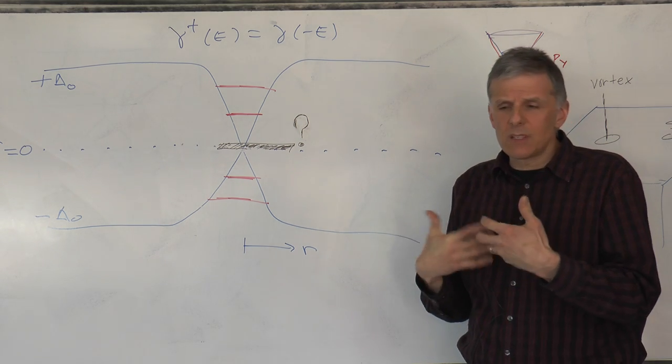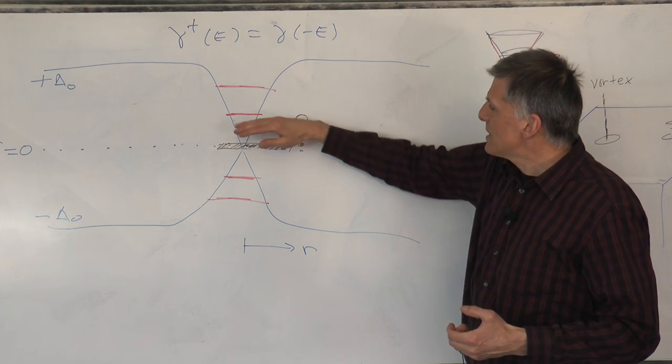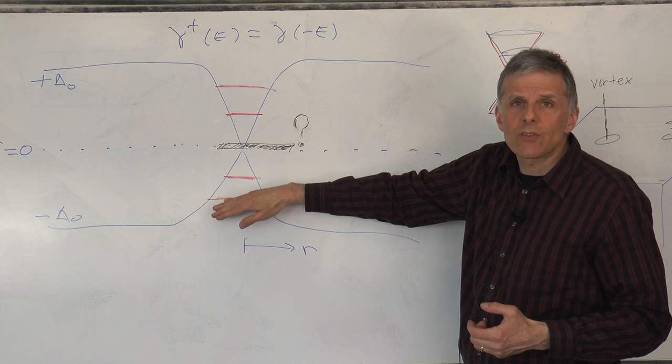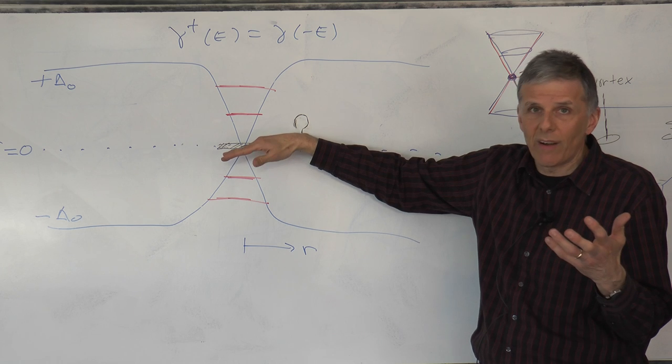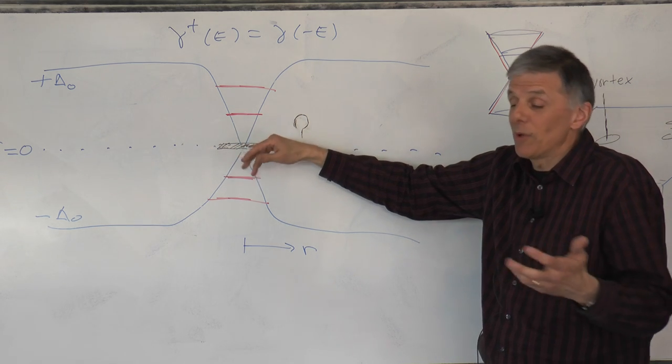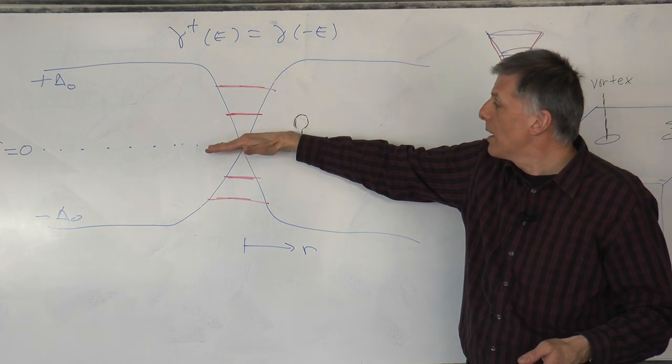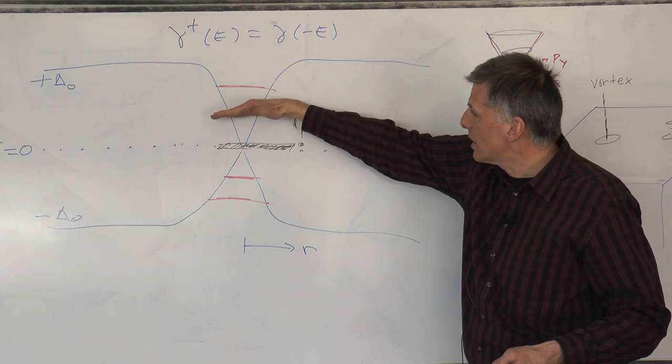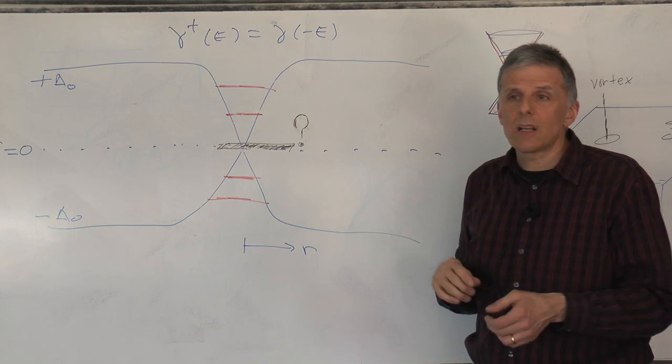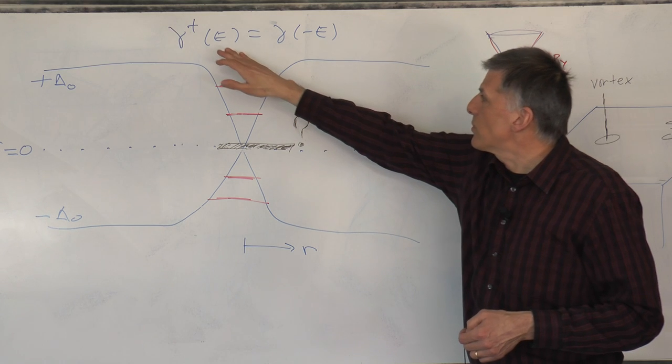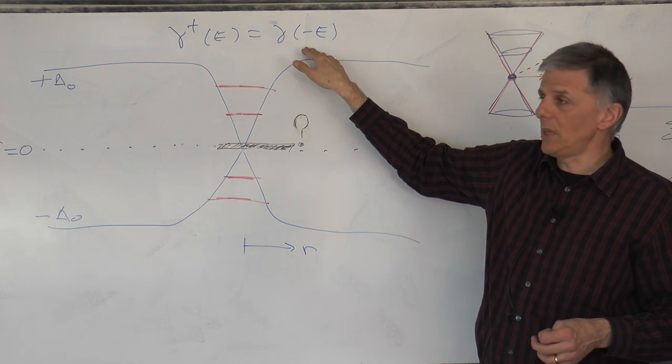Superconductors have this peculiar symmetry called particle-hole symmetry, which means that these levels have to be symmetrically arranged around the middle of the gap. Zero energy is not just arbitrary in a superconductor. It's the middle of the gap. So there's this symmetry that if there's a level above, there should be a level below. The symmetry is expressed in second quantization by this relation between creation operators at energy E and annihilation operators at energy minus E.